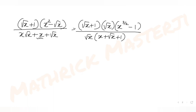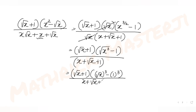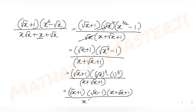The √x cancels. I can write the numerator as x^(3/2) - 1, which is the cube root of x cubed minus 1, i.e., (√x)³ - 1³. The denominator is x + √x + 1. Using the identity a³ - b³ = (a - b)(a² + ab + b²), with a = √x and b = 1, the numerator becomes (√x - 1)(x + √x + 1).